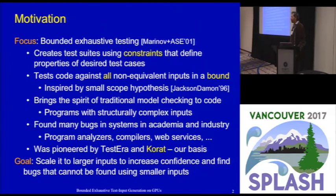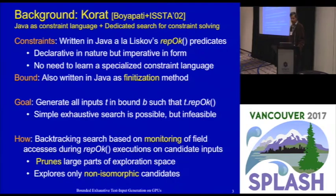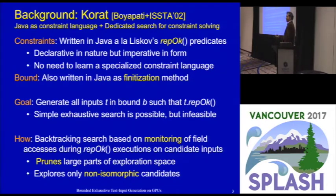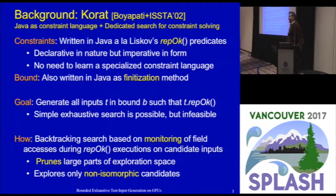Our overarching goal is to scale bounded exhaustive testing to create inputs of larger size, so we can have more confidence and find bugs that cannot be found using smaller inputs. Here is a bit of background on Korath. One of the key ideas in Korath was to allow the user to write constraints in Java, so they don't have to learn a new language. You can also provide the bound on the size in Java via a finalization method.